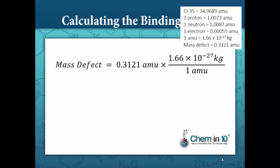We convert that mass to kilograms by multiplying by the conversion factor, 1.66 times 10 to the negative 27 kilograms per AMU, which becomes 5.18 times 10 to the negative 28 kilograms.